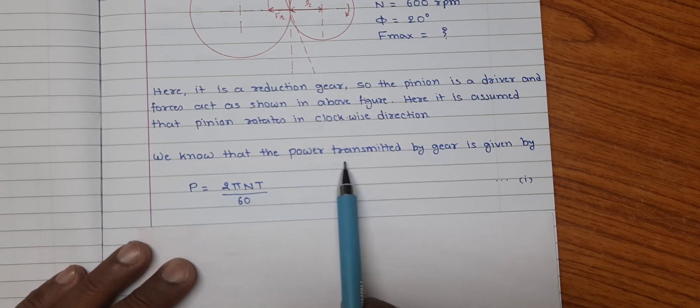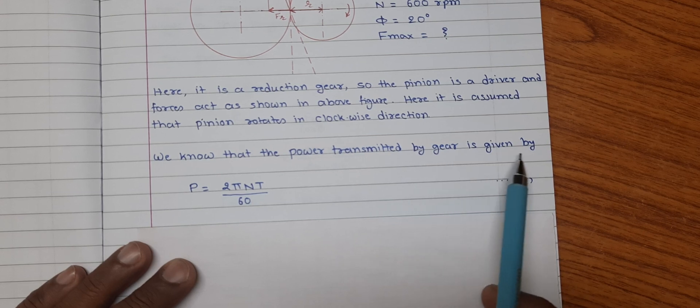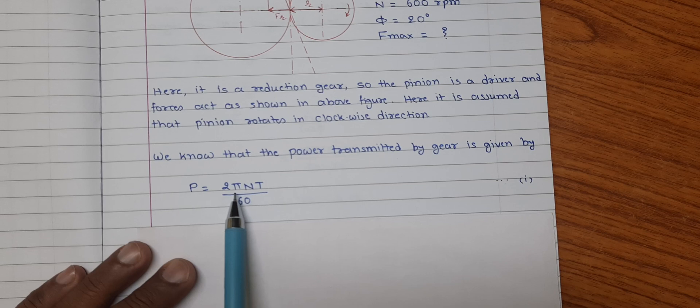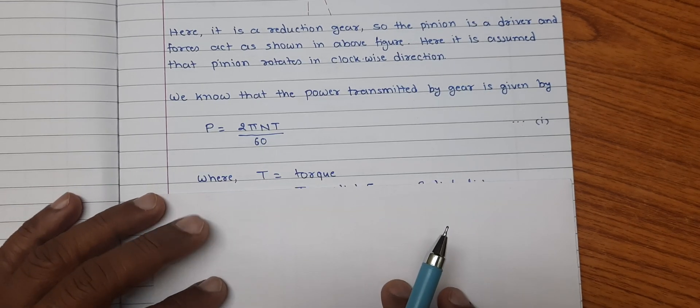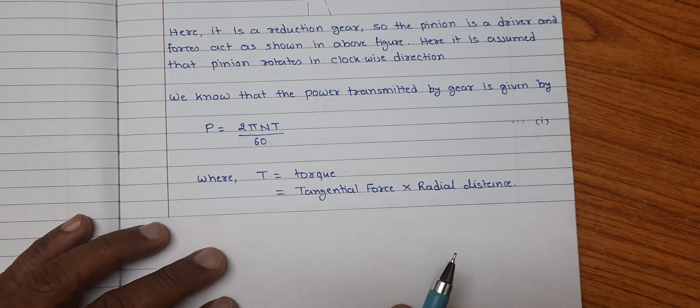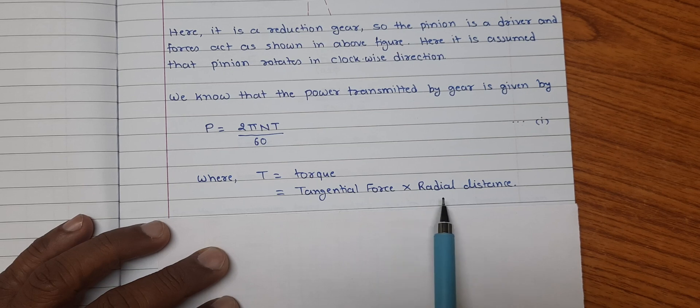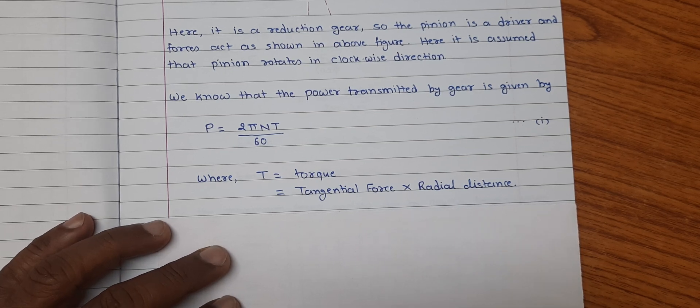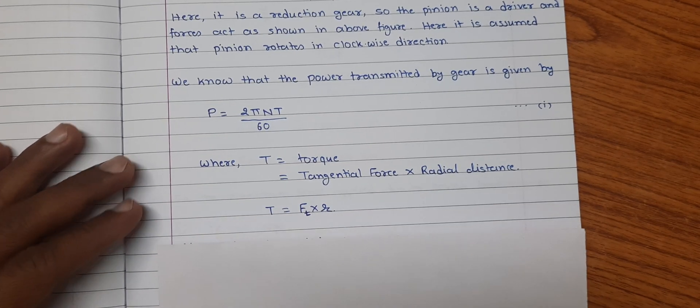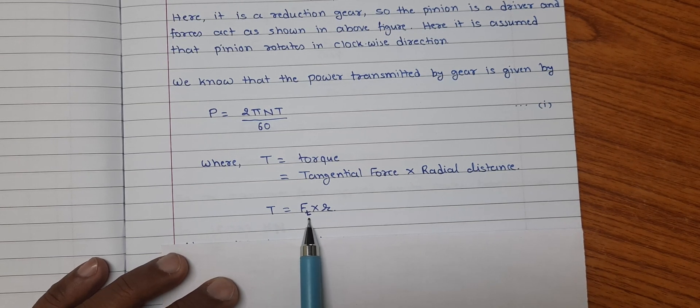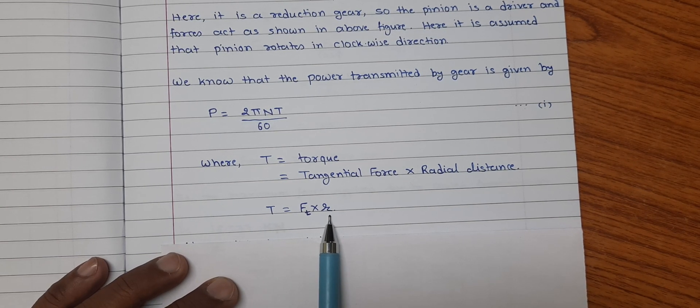We know that the power transmitted by gear is given by P is equal to 2πNT upon 60, where T is torque and it is given by tangential force into radial distance. We can write T is equal to ft into radius r.